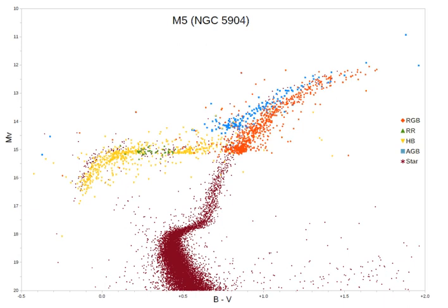The asymptotic giant branch is a region of the Hertzsprung-Russell diagram populated by evolved cool luminous stars. This is a period of stellar evolution undertaken by all low to intermediate mass stars late in their lives. Observationally, an AGB star will appear as a bright red giant with a luminosity thousands of times greater than the Sun. Its interior structure is characterized by a central and largely inert core of carbon and oxygen, a shell where helium is undergoing fusion to form carbon, another shell where hydrogen is undergoing fusion forming helium, and a very large envelope of material of composition similar to main-sequence stars.